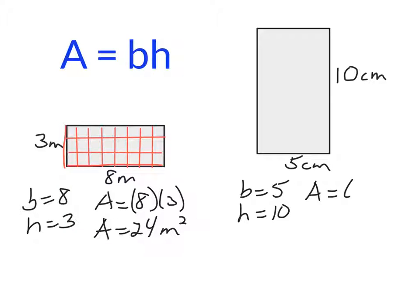Area equals 5 times 10. You're just multiplying the two numbers together, and that gets you 50 square centimeters.